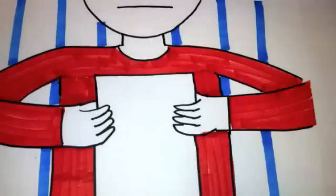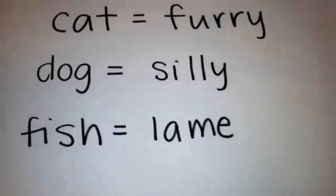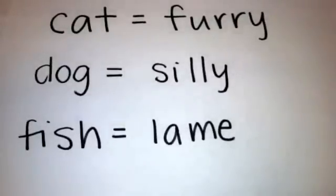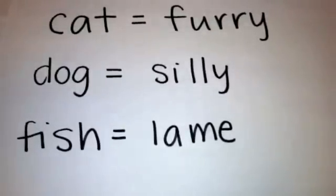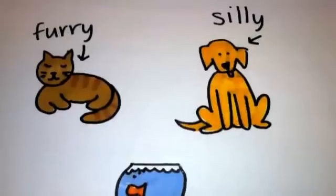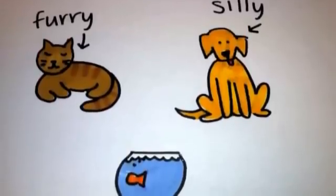Some may say that this is no different than speaking your first language — in this case, English. Yes, you are choosing the correct response for a combination of words when reading English. However, you are able to understand the meaning of the words you just saw. For instance, cat equals furry, dog equals silly, and fish equals lame — all have meaning to you and you can picture what this looks like: a furry cat, a silly dog, and a lame fish.